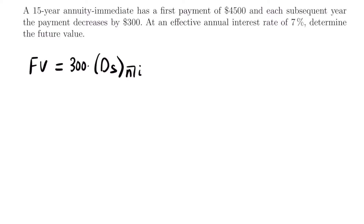Now we need to find N and I. We're told we have a 15-year annuity immediate, so N equals 15. For the interest rate, we're told there's an effective annual interest rate of 7%, so I equals 0.07. Before plugging these values in, check that your interest rate is compounded at the same frequency as your payment cycle. We have a 15-year annuity with payments made every year and an effective annual interest rate — so both are yearly, the frequency matches up, and we are good to go.